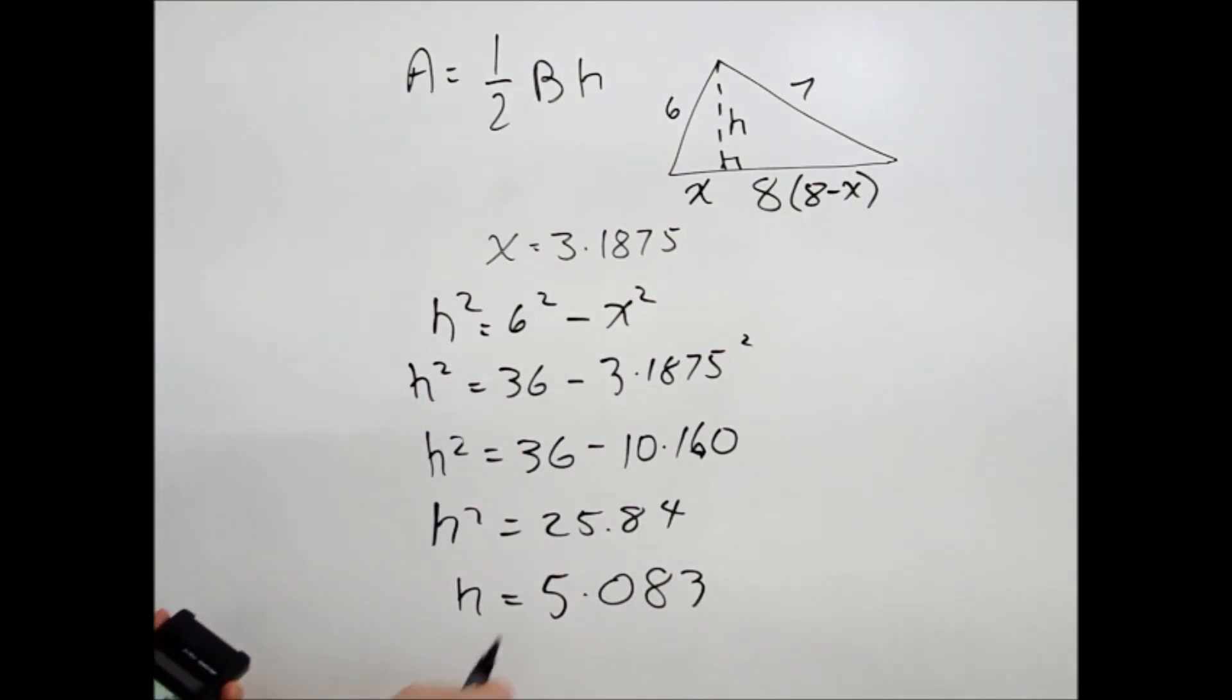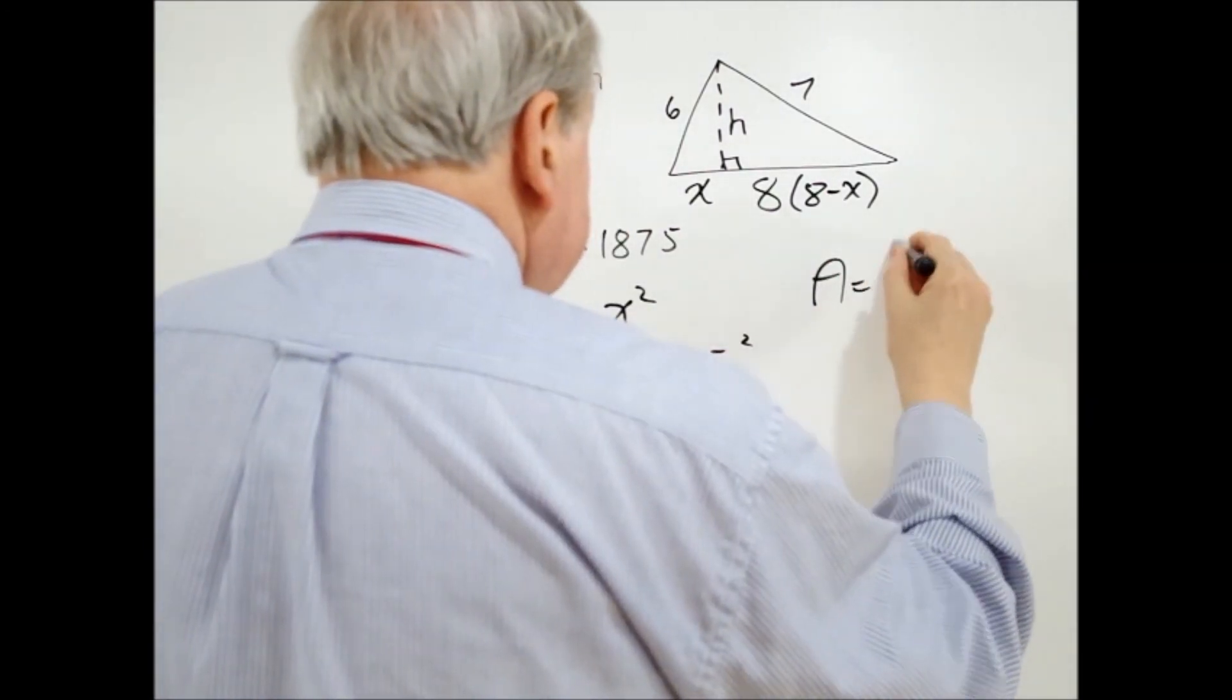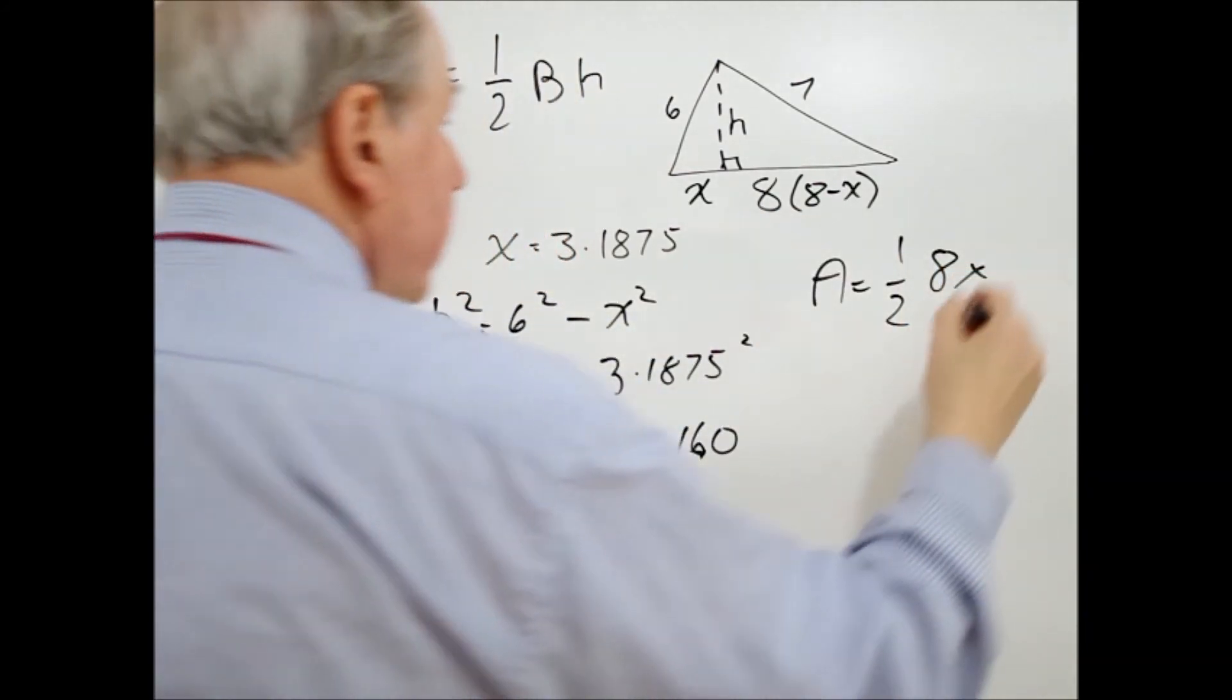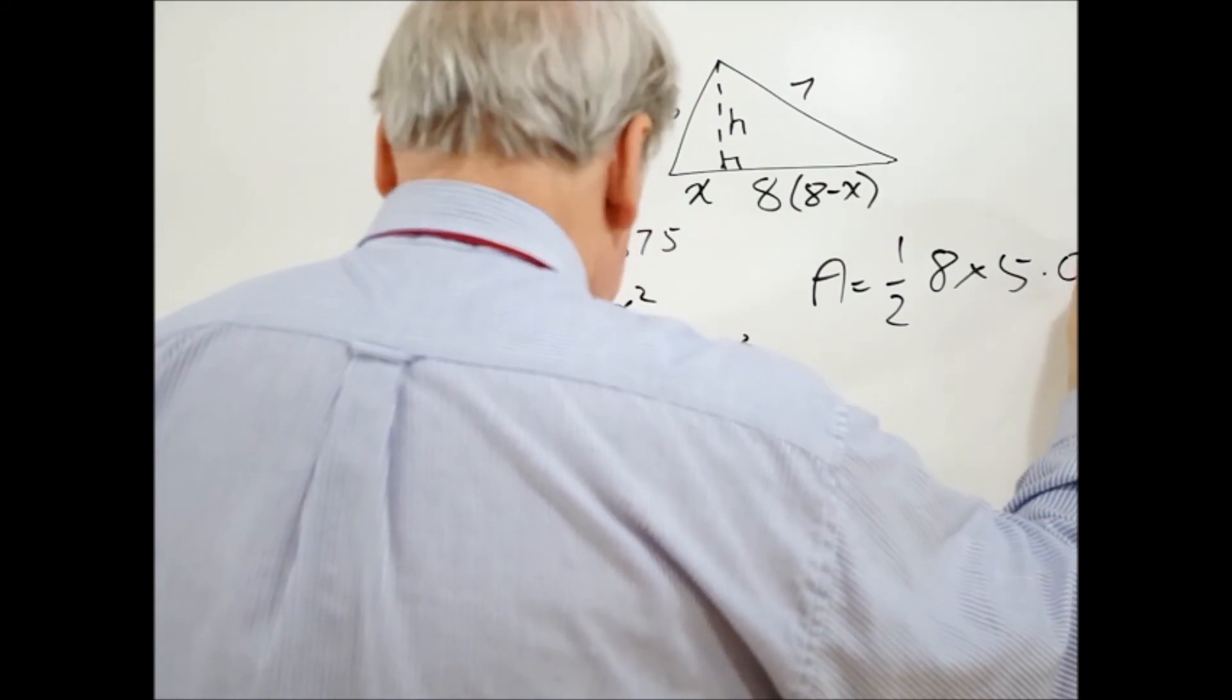All right, having found that, we can now go back to this equation to find the area. So I'll start up here. The area is equal to one-half, the base, which is 8, times the height, which is 5.083.